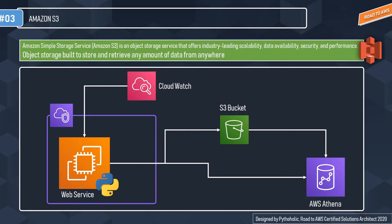Looking at the visualization: you have a web service hosted in the VPC, a CloudWatch alarm that triggers auto scaling groups, the generated logs are stored in an S3 bucket, and you use AWS Athena to query and process those logs to get the reporting structure you want. Now that you have a fair understanding of what we're talking about, let's do a deep dive into S3 objects.